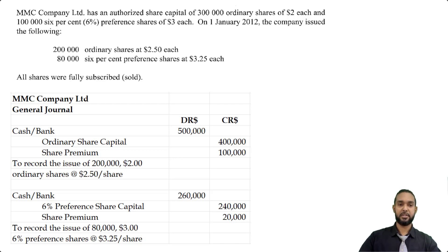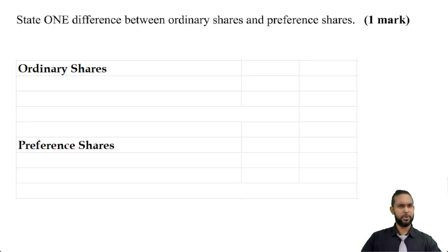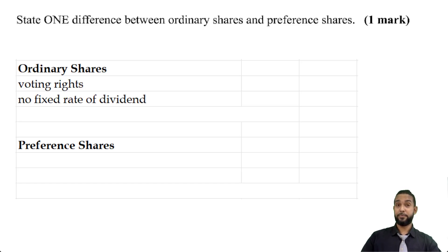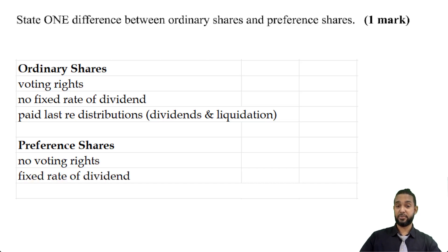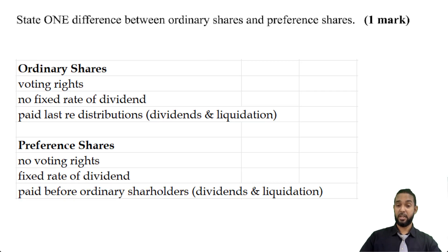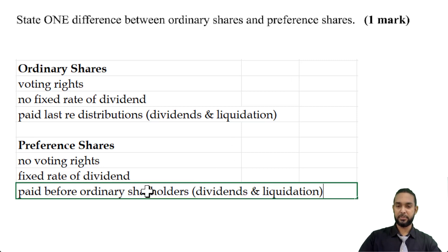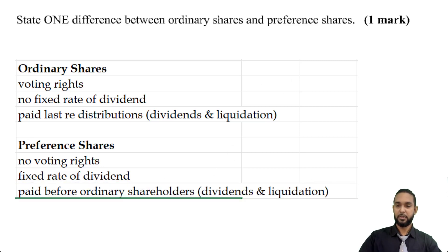Now let's look at the other part — the differences between ordinary and preference shares. They asked for one difference, but I'll give you a few. For ordinary shares: they have voting rights, they have no fixed rate of dividend, and they are paid last regarding distributions — meaning dividends and liquidation. For preference shares: they have no voting rights, they are paid a fixed rate of dividend, and they are paid before ordinary shareholders with respect to distributions.